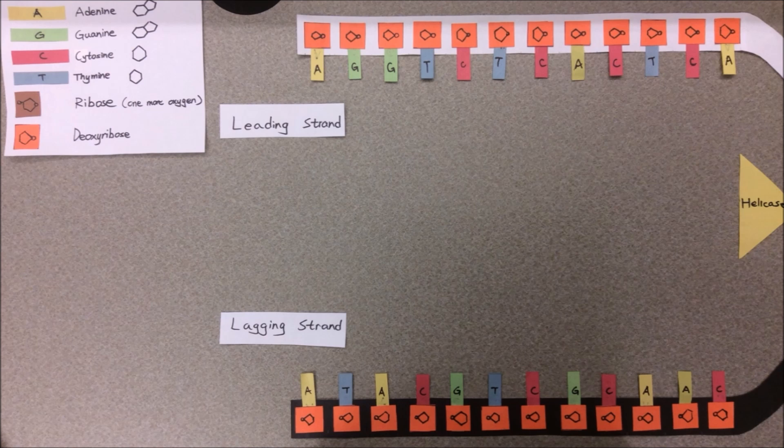When the two parent strands of DNA are separated to begin replication, one strand is oriented in the 5' to 3' direction, while the other strand is oriented in the 3' to 5' direction.